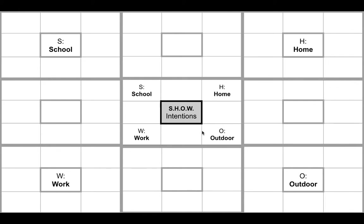This is a fractal grid of our life space — the four life spaces that we spend our time: school, home, outdoor, or work. This fractal grid focuses on intentions, meaning anything you have to do in the future can be written here as a goal, a to-do, a mission, or an objective. Everything that occurs in our lives — past, present, or future — can be documented using the show intentions fractal grid.